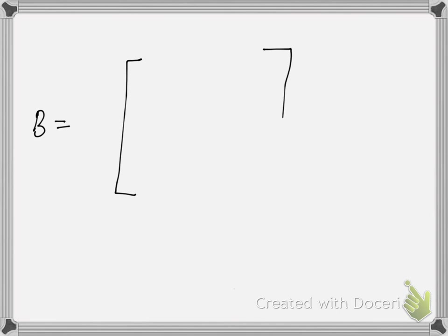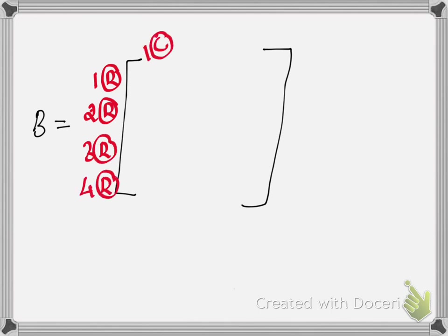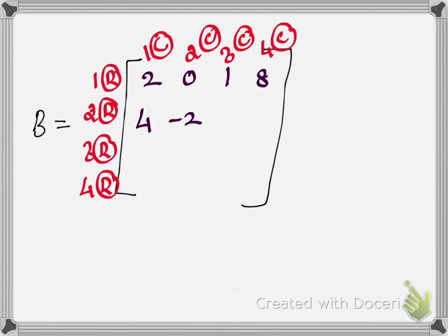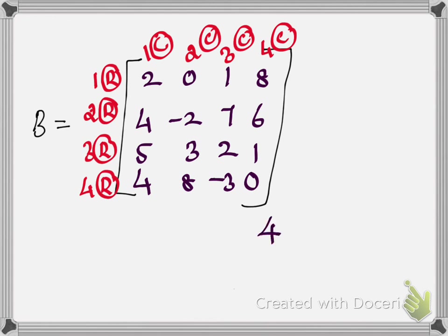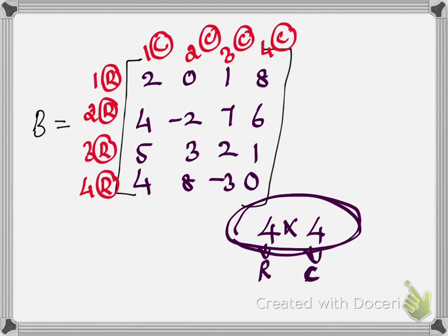Another example: matrix B. The elements are minus 2, 7, 6, 5, 3, 2, 1, 4, 8, minus 3, 0. The number of rows is 4 and the number of columns is also 4. Since the number of rows and columns are equal, this is called the square matrix of order 4.